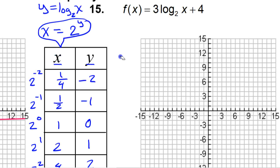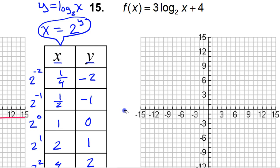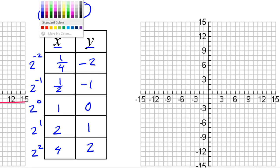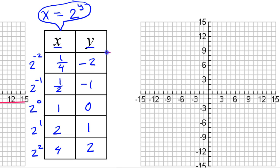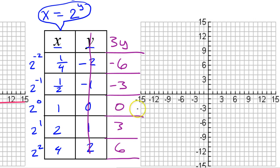Because there is an a value of 3, we will need a third column. And that third column will be the a value times the y values. So if I multiply all these by 3, I will get negative 6, negative 3, 0, 3, and 6. We can throw out the old y column and use the new.